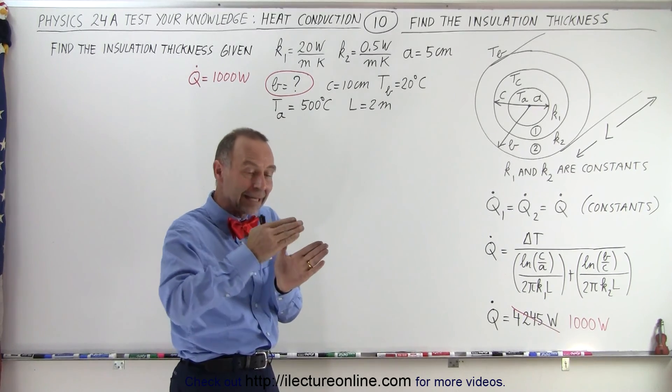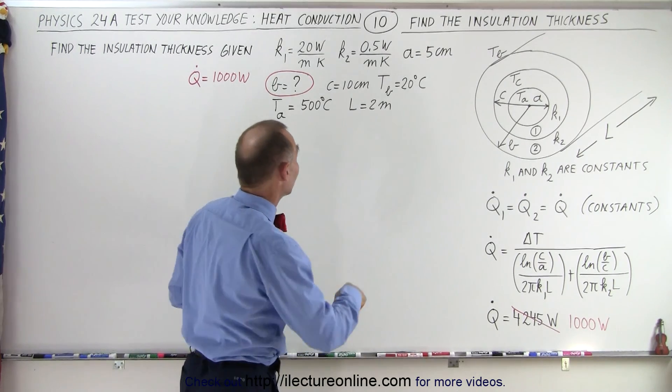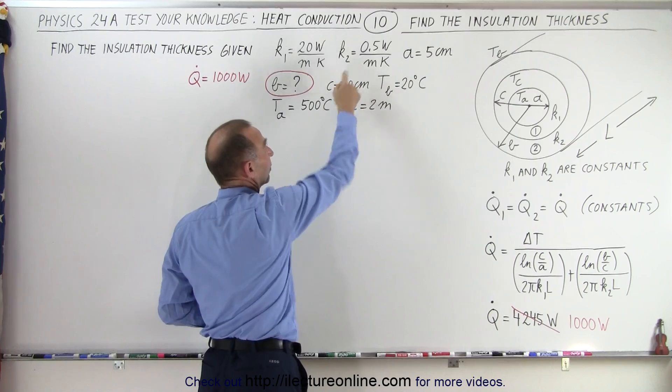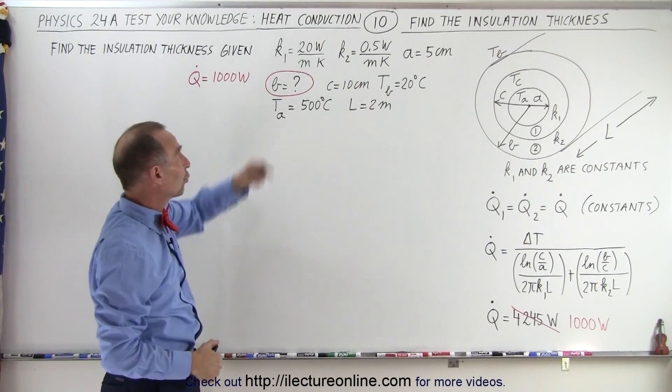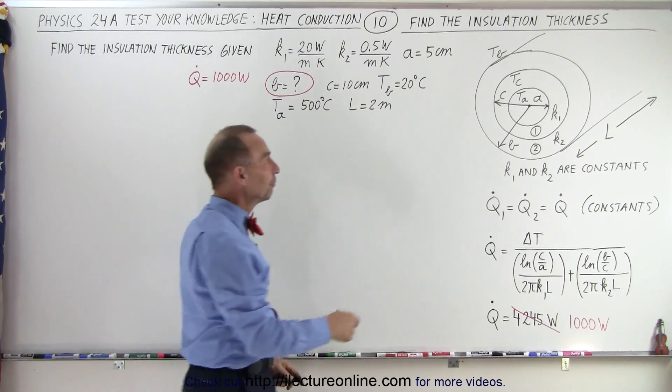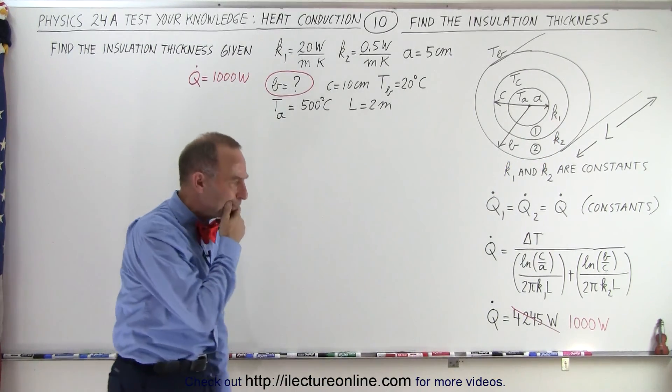So we can accomplish that by adding additional insulation, making the insulation layer thicker. The insulation layer where the k, the heat conductivity constant, is 0.5 watts per meter per kelvin instead of the 20 watts per meter per kelvin for the inside layer, layer 1. All right, how do we do that?